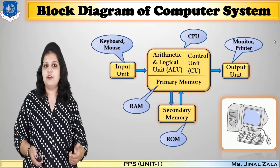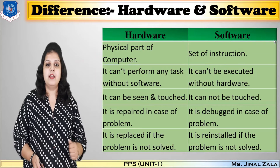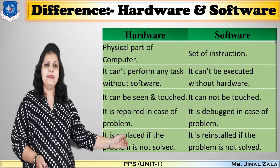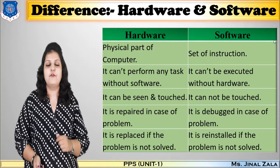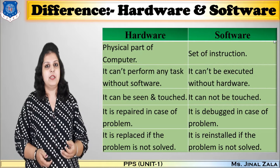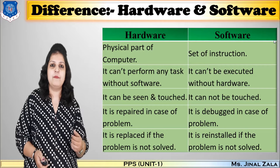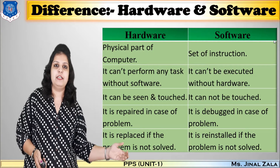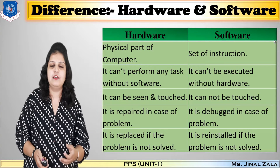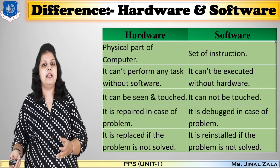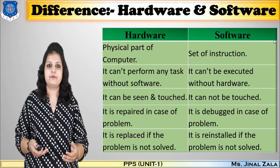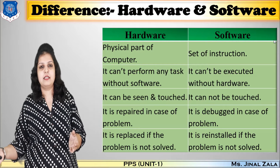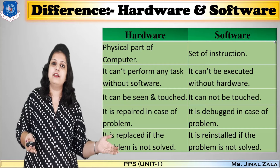A computer is a combination of hardware and software. Hardware is the physical part of the computer — keyboard, mouse, and CPU are all hardware. Software is a set of instructions or programs; the best example is the operating system. Hardware cannot perform any task without software, and software cannot be executed without hardware. They are both dependent on each other.